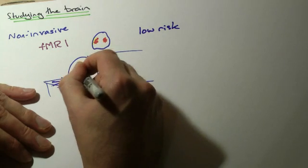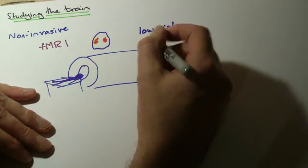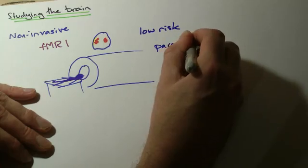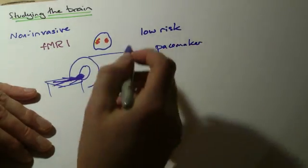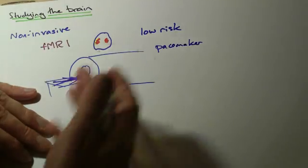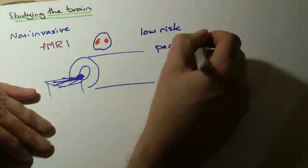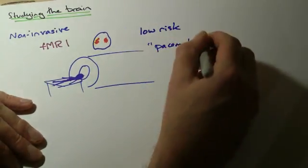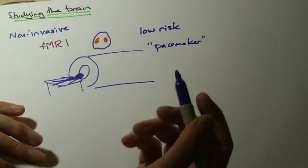There is potentially risk for people who have things like a pacemaker fitted which may have metal parts. Anything that's metal would be a problem, or if somebody had metal pins in bones. Normally someone who's not got any of these things, it's not a problem.